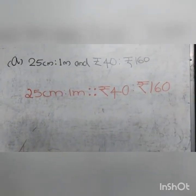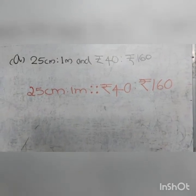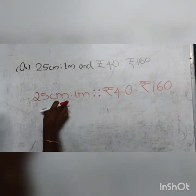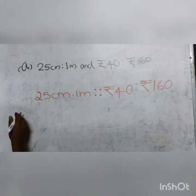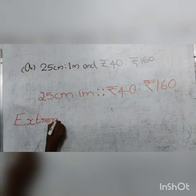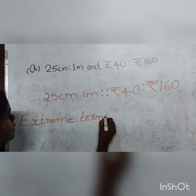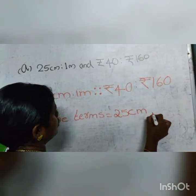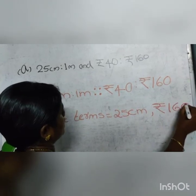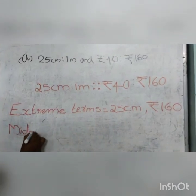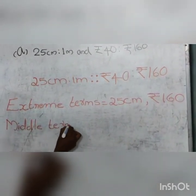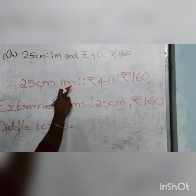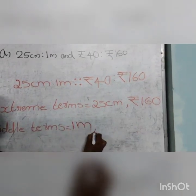Next, the question asks us to find the extreme terms and middle terms. The extreme terms lie in the extreme positions. Here, the extreme terms are 25 cm and Rs.160. So we write: extreme terms = 25 cm and Rs.160. The middle terms lie in the middle positions. Here, the middle terms are 1 meter and Rs.40. So we write: middle terms = 1 meter and Rs.40.